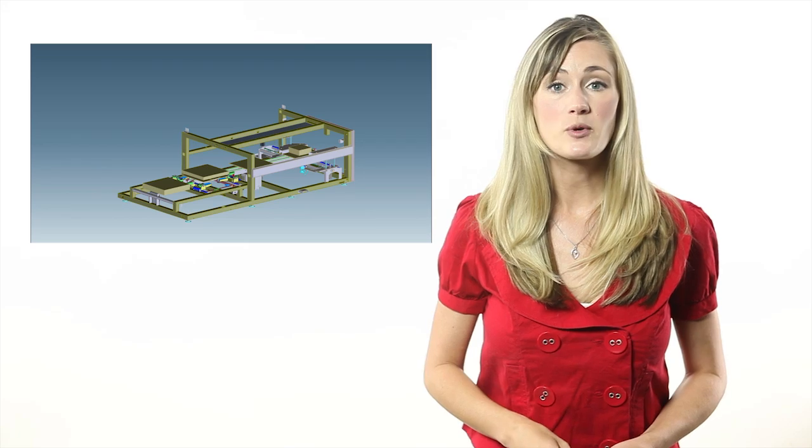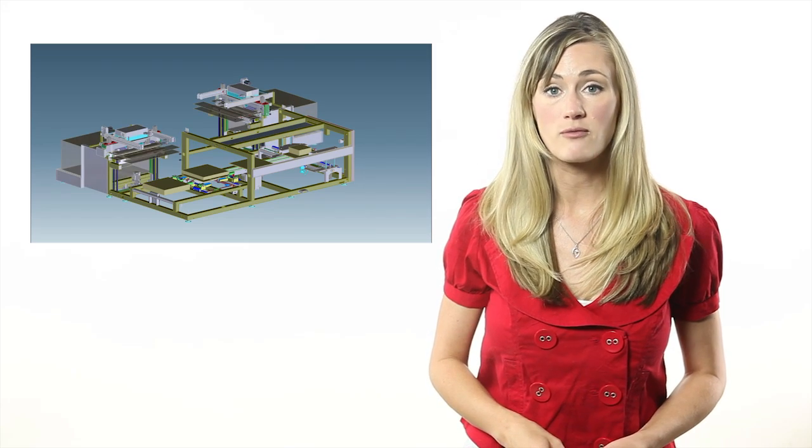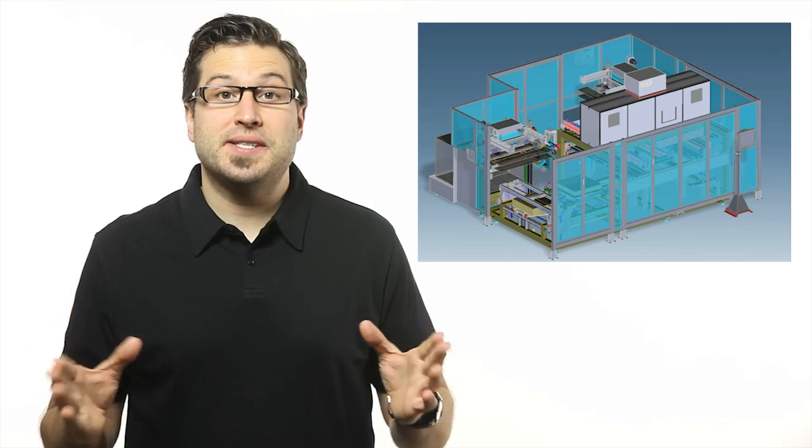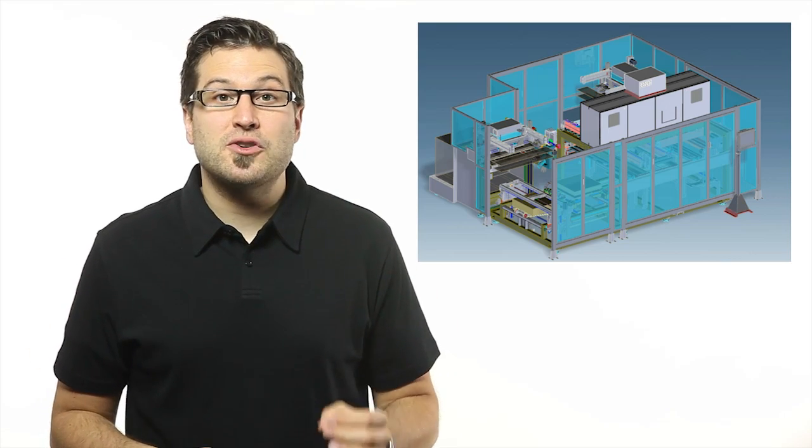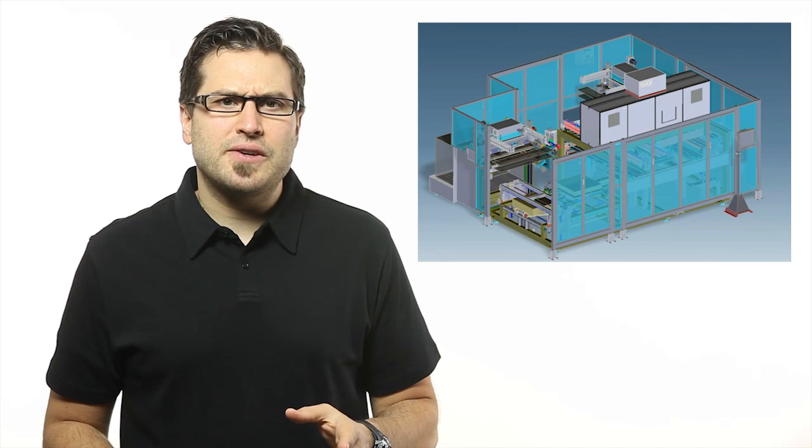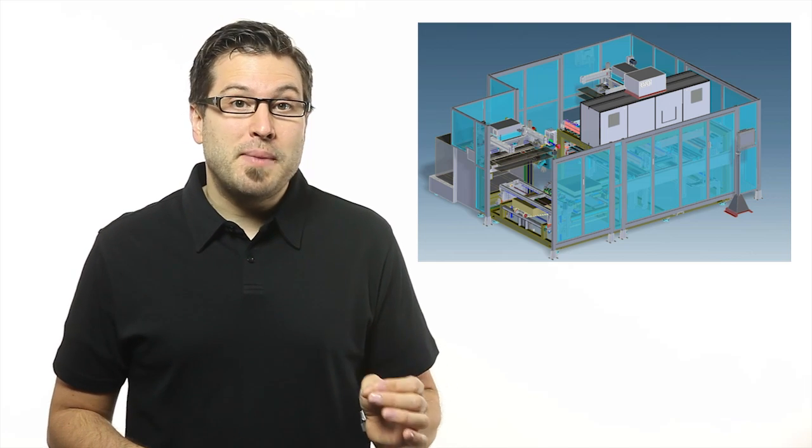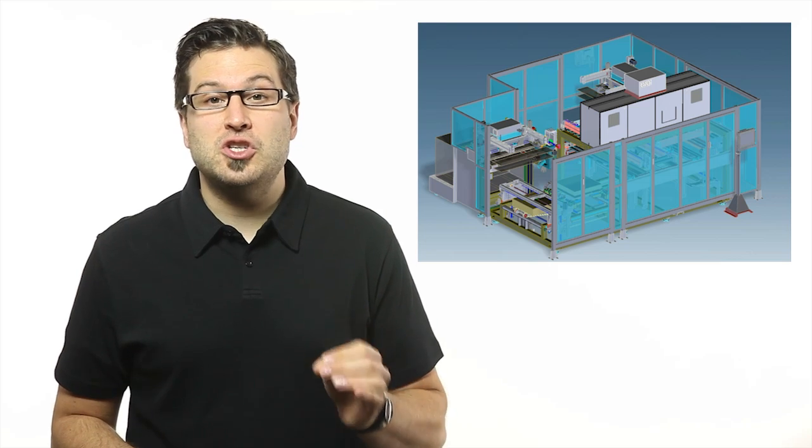This was made possible by using Creo direct modeling software, enabling the design team to skip the rapid prototyping. In addition to design, manufacturing was made faster and easier, because the CAD files could be loaded straight into laser cutting and welding machines, automating fabrication of the machine's sheet metal components.